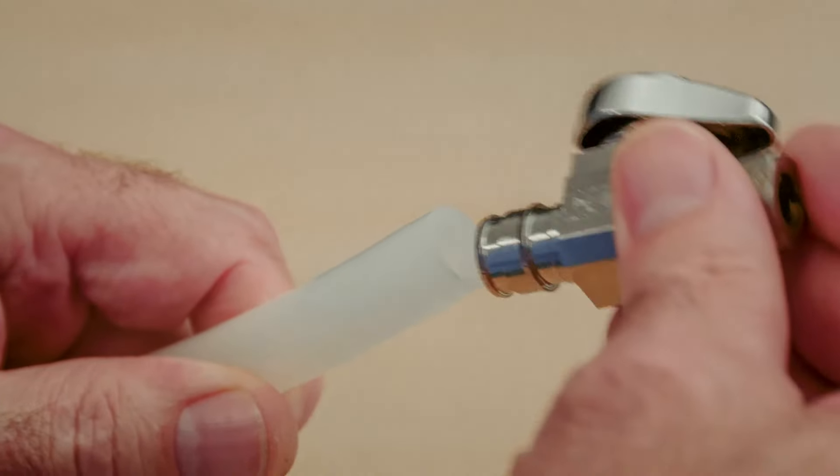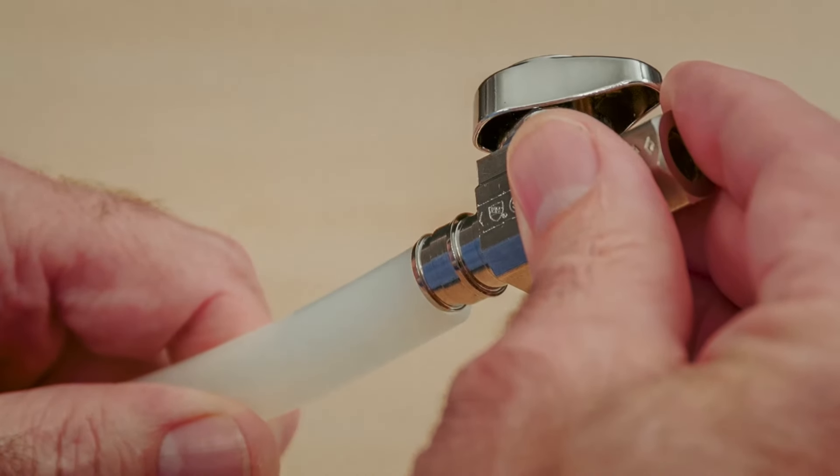This stop has a half-inch inlet that will not fit into half-inch PEX tubing. To install the stop, the tubing first needs to be expanded.